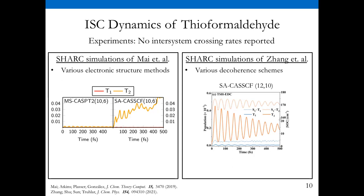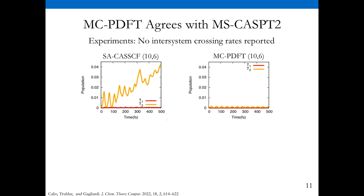Now I want to look at results from MCPDFT. On the left is CASSCF at a 10-6 active space. Within 500 femtoseconds, you see about 4% transition into the T2 state. On the other hand, with MCPDFT at 10-6, we see no population transition into T2 state. That gives us good agreement with CASPT2 results, which has been very promising.